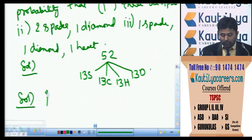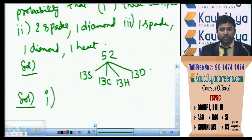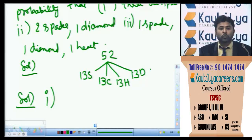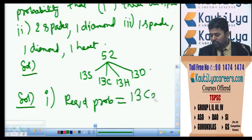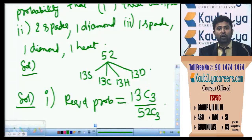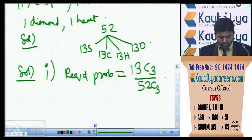For the first part, 3 spades: drawing 3 spades out of 13 can be done in 13C3 ways. Drawing 3 cards out of 52 can be done in 52C3 ways. So the required probability is 13C3 by 52C3.